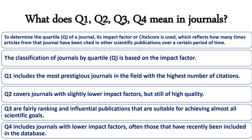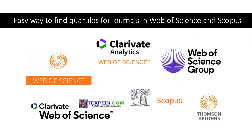Q4 journals have the lowest citation impact within the subject category. They represent the bottom 25 percent of journals in terms of citations and are considered to have the least influence compared to Q1, Q2, or Q3 journals. These are the four quartile categories that journals are divided into.